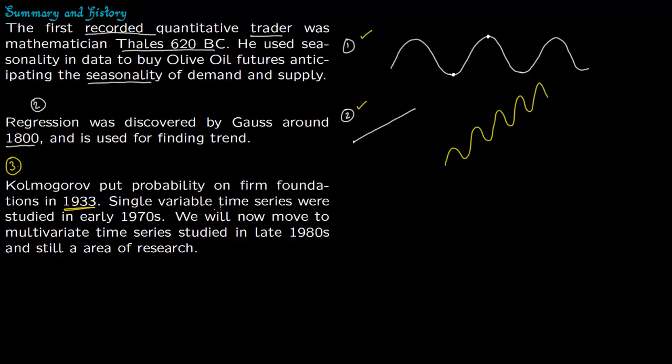Single variable time series were then studied in late 1960s and early 1970s. This was the story which we have covered till now, and after this lecture we are going to move on to multivariate time series. These multivariate time series were studied in late 1980s and they are still an area of research.